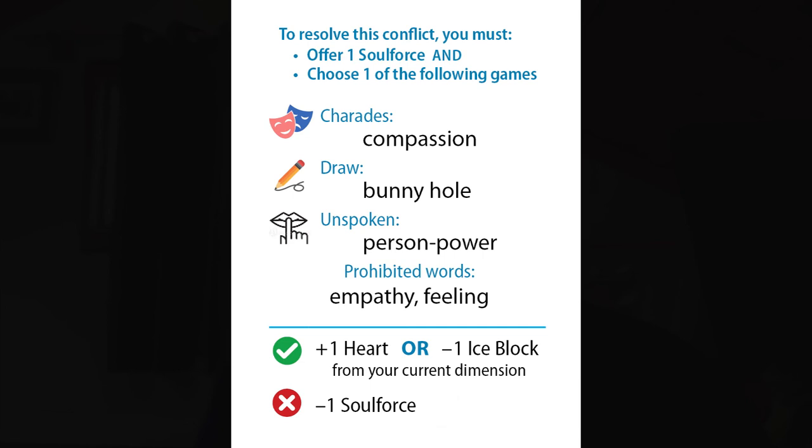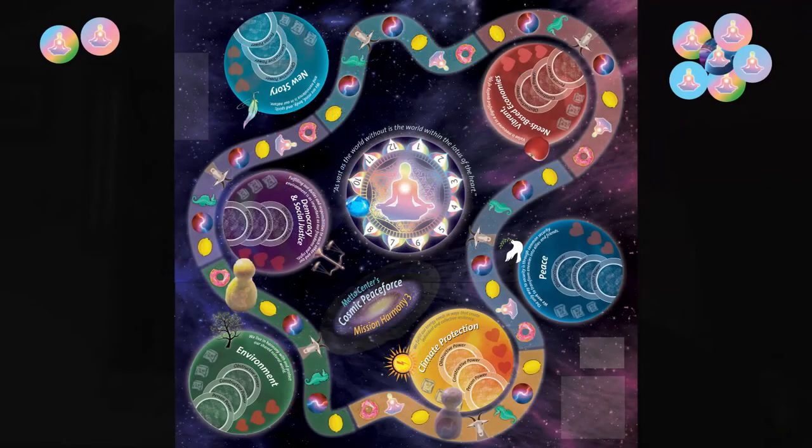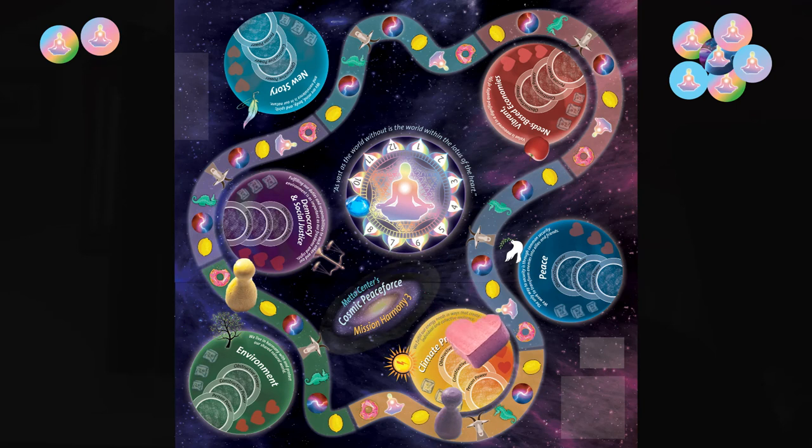I look at the check with the green, and it says I can put one heart or I can remove one ice block from the current dimension I'm in. I'm still in the peace section, and we just lost two lotus petals. We don't have any hearts in here, so I'm going to put a red heart on the first heart in that dimension. We are on our way to mission success, just a little bit closer. But at the end of my turn, please note that I've just used up two soul force tokens, so the disharmony yuga is sort of gaining on us.